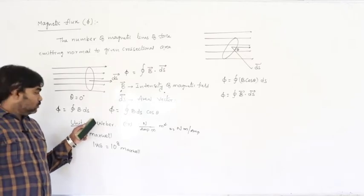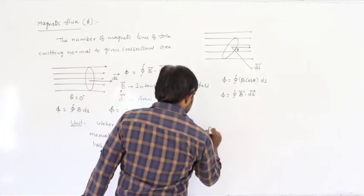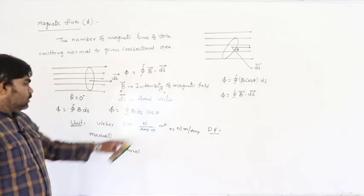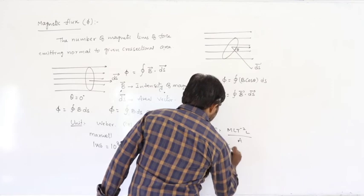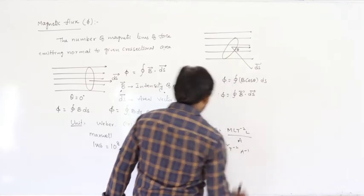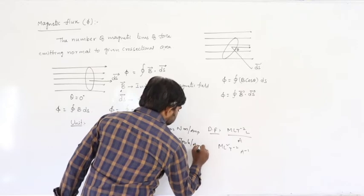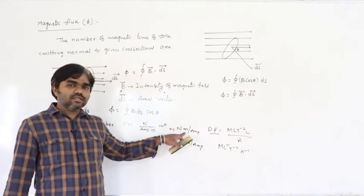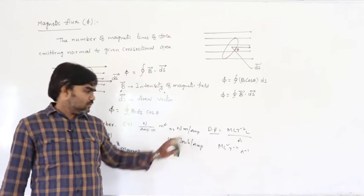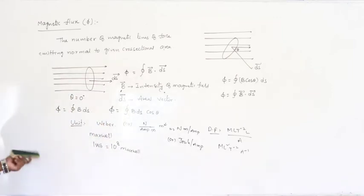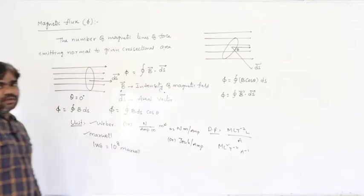The dimensional formula of magnetic flux is derived from Newton·meter / ampere: M L² T⁻² A⁻¹. Since force × displacement = joule, it is also expressed as joule per ampere. Magnetic flux is a scalar quantity, while magnetic field intensity is a vector quantity, so we write the unit as Weber only.